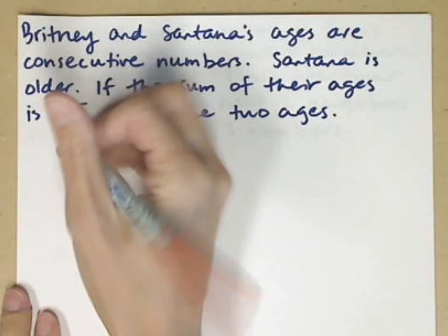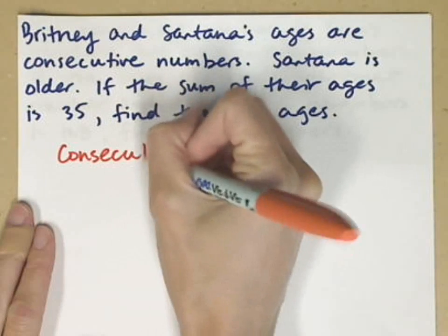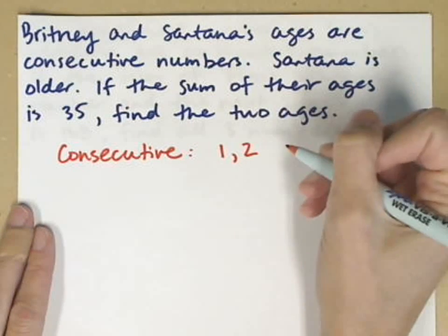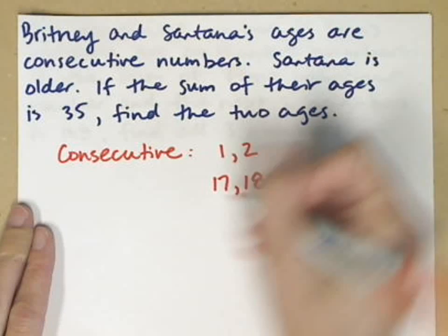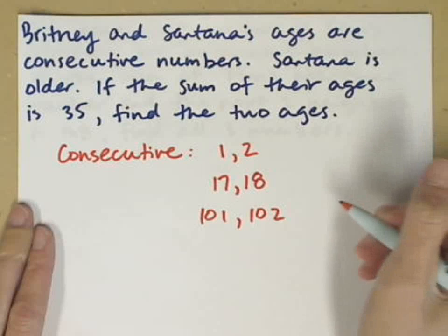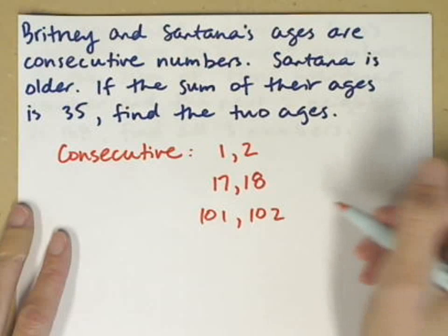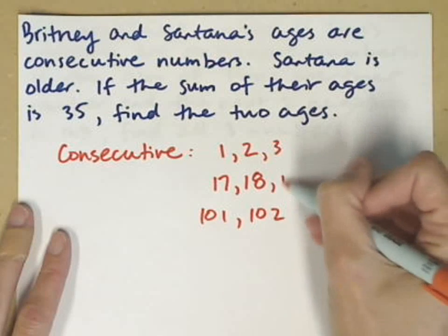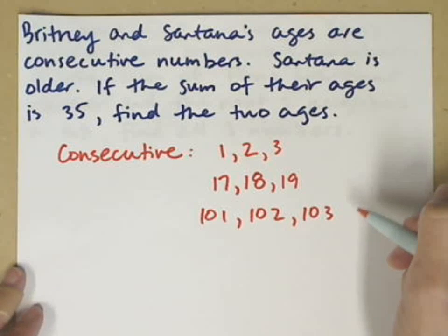Before we tackle this particular example, let's look at some numbers that fit into this idea of consecutive. So consecutive numbers could be 1 and 2, 17 and 18, 101 and 102. That would be a pair of consecutive numbers. But we could have any number of consecutive numbers. So if we had three consecutive numbers, we could just add the next number to each of these. So consecutive numbers are numbers that are just one unit or one value apart.